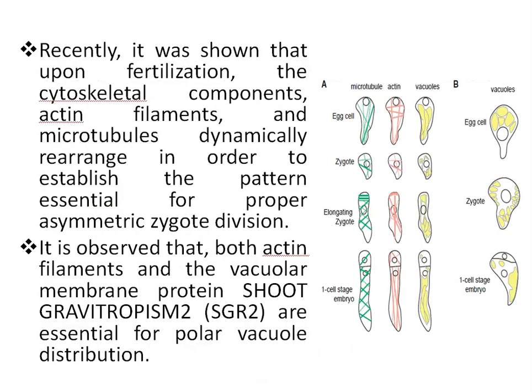Recently, it was shown that upon fertilization, cytoskeleton components like actin filaments and microtubules also dynamically rearrange in order to establish the pattern essential for proper asymmetric zygote division. You can see here the arrangement of cytoskeleton components like microtubules, actin, and vacuoles in the egg cell, then in the zygote, the elongated zygote, and in the one-cell stage embryo. It is observed that both actin filaments and the vacuolar membrane protein SGR2 are essential for polar vacuole distribution.